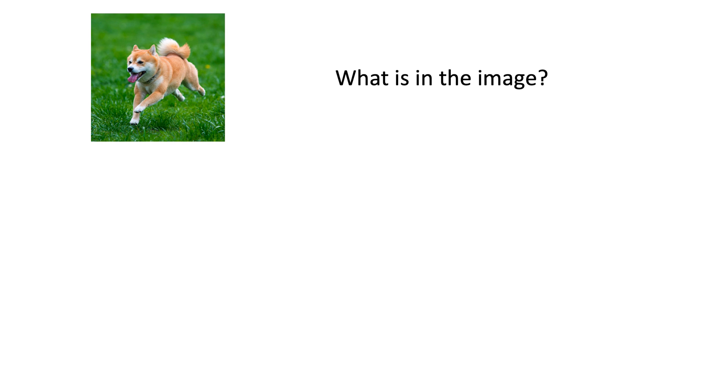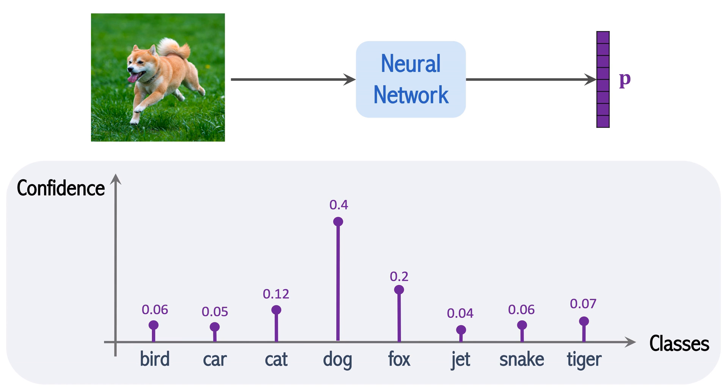What is image classification? For example, we show this image to a model. The model is supposed to infer that the image contains a dog. Feed the image into a neural network. The neural network outputs a vector p. p indicates the result of classification. Each element of p corresponds to a class. If a dataset has 8 classes, then p is 8-dimensional.